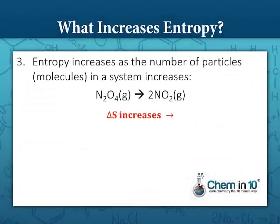Number three: entropy increases as the number of particles in a system increases. So when we go from dinitrogen tetraoxide to two molecules of nitrogen dioxide, we are increasing the number of particles — going from one molecule to two — so entropy is increasing.